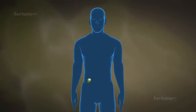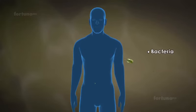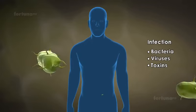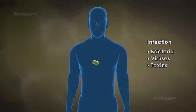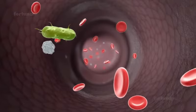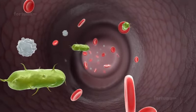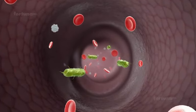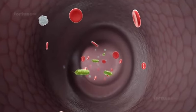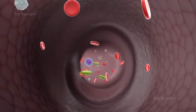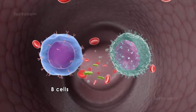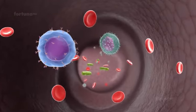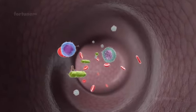When pathogens such as bacteria, viruses, or toxins enter the body and cause an infection, they will activate a natural response that is referred to as natural active immunity. Immune cells such as B cells and T cells will attack the antigen, eventually eliminating it.